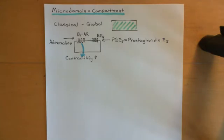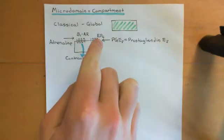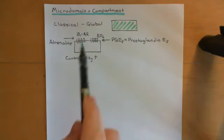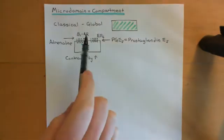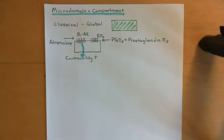If you use the classical view of how cyclic AMP signaling works — that cyclic AMP goes up in the entire cytoplasm of the cell — then the effect of stimulating the beta-1 adrenergic receptor surely should not be any different from stimulating EP4 receptors. This theory cannot account for this, and this is fundamentally where the idea of microdomains comes from.